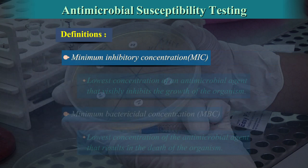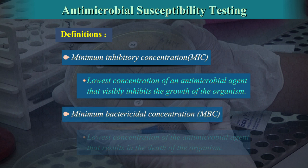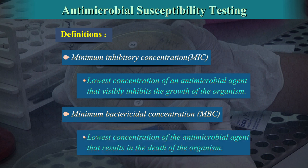Minimum Inhibitory Concentration or MIC is the lowest concentration of an antimicrobial agent that visibly inhibits the growth of the organism. Minimum Bactericidal Concentration or MBC is the lowest concentration of the antimicrobial agent that results in the death of the organism.